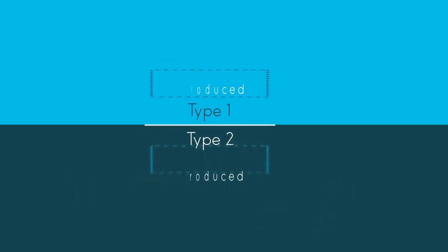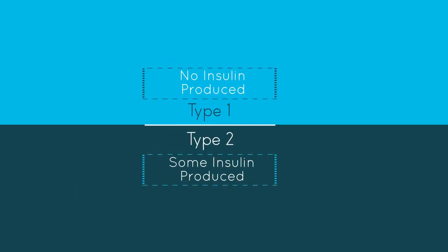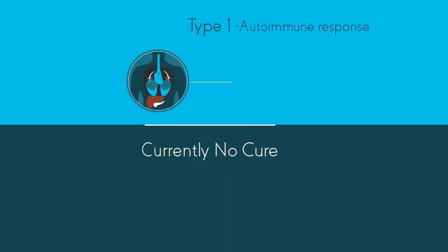There are two main types of diabetes. Type 1 is when there is no insulin at all, whereas type 2 is when there is insulin present, but either there isn't enough or it isn't working properly. Type 1 diabetes is an autoimmune response, where the body destroys its own insulin-making cells.